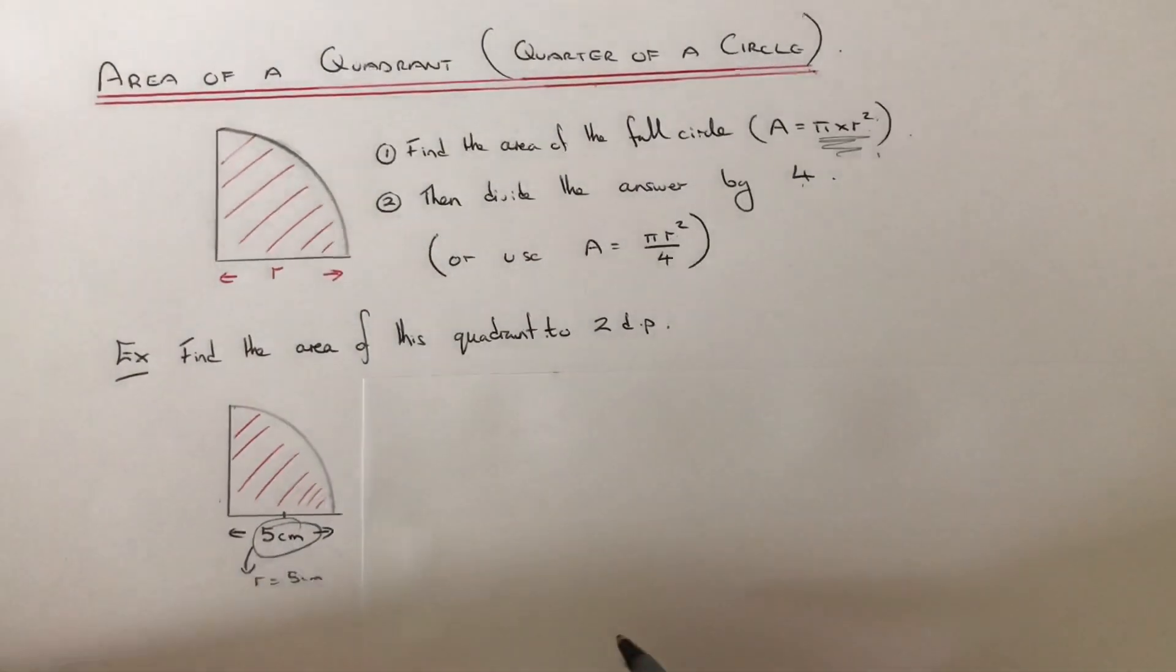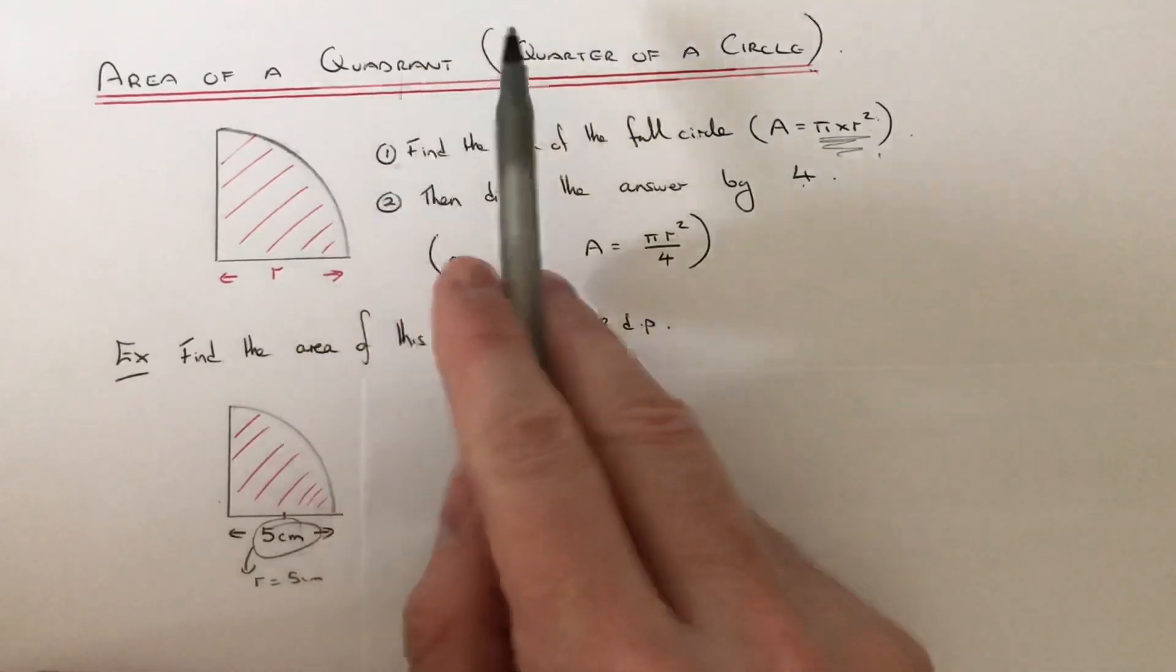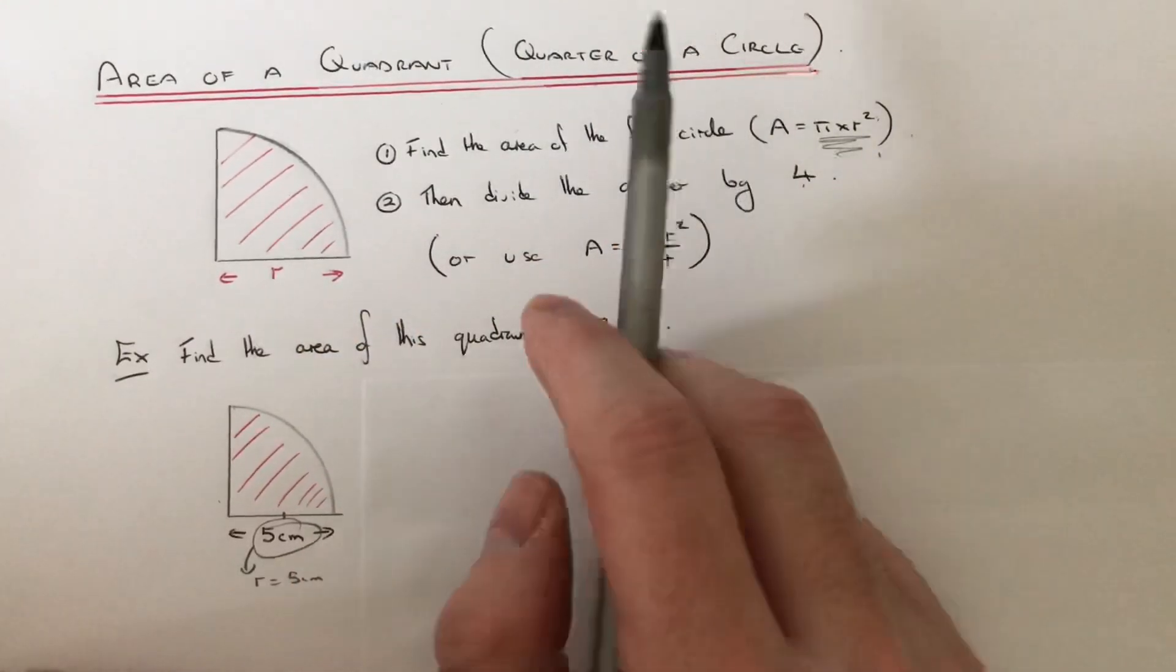Hi guys, today I'm going to show you how to work out the area of a quadrant. A quadrant is a quarter of a full circle.